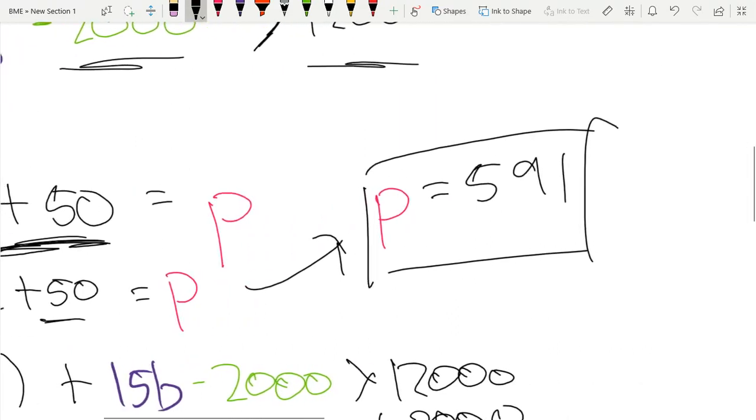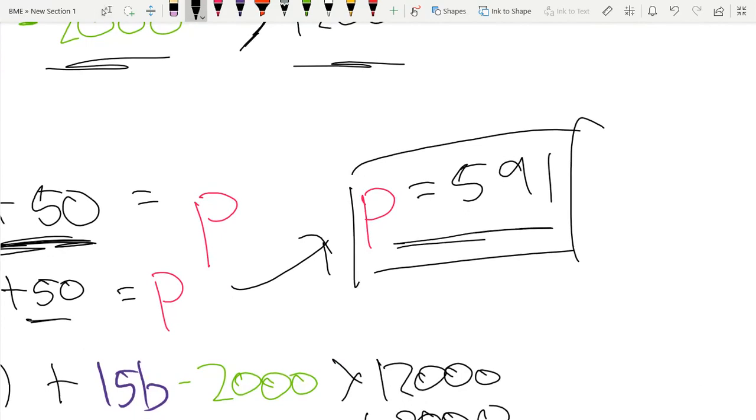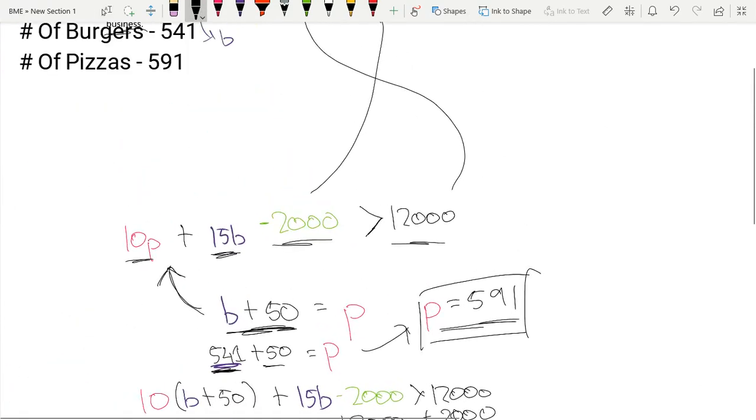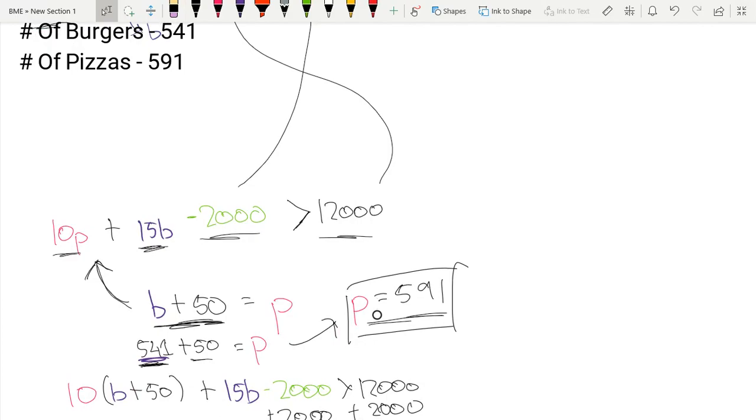Plus 50 is P and that's how our number of pizzas is now 591. Thank you for watching and I hope that you found this video helpful.